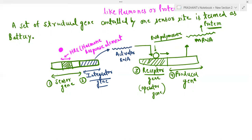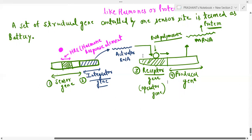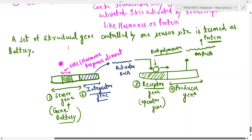They are working as one unit, whereas in the prokaryotic operon, all the structural genes within the operon are present together. And this sensor gene — this is why we call it the gene battery — is the reason the model proposed by Britten and Davidson is called the gene battery model. So this was the functioning of a eukaryotic operon.